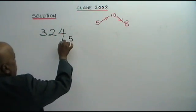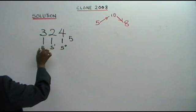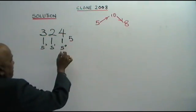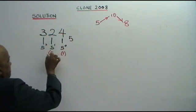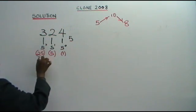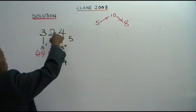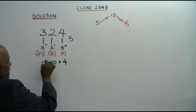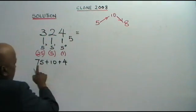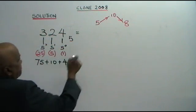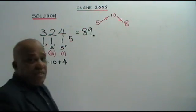First, we convert to base 10. This is the units — 5 to the power of 0. This represents 5 to the power of 1. This digit represents 5 squared. So: 5 to the power of 0 is 1, 5 to the power of 1 is 5, 5 squared is 25. So 4 times 1 is 4, plus 2 times 5 is 10, plus 3 times 25 is 75. Adding all this up: 75 plus 10 plus 4 equals 89 in base 10.